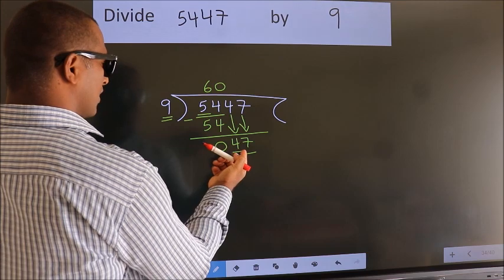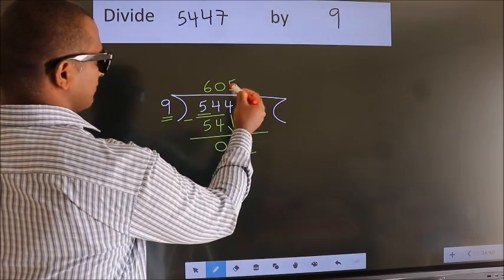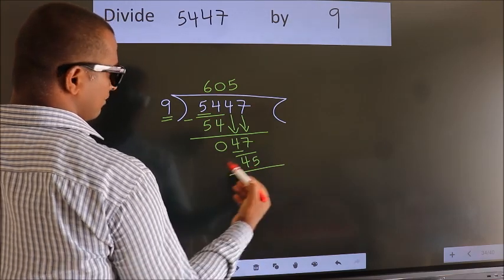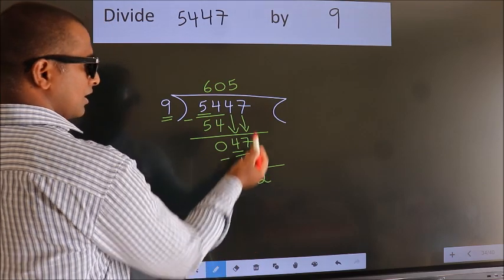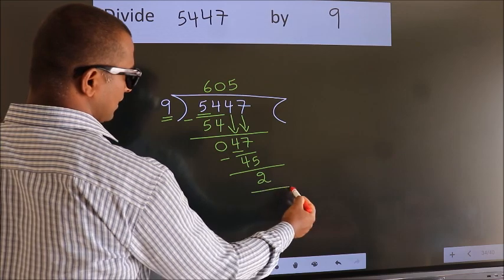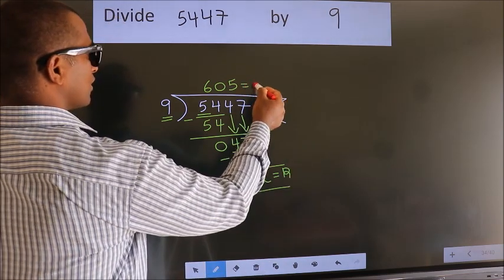A number close to 47 in the 9 table is 9 fives, 45. Now we subtract. We get 2. No more numbers to bring down, so we stop here. This is our remainder. This is our quotient.